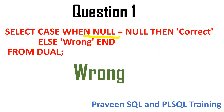The answer is wrong. Remember one thing: one null cannot be equal with another null because null is nothing — no value. How can you compare a null value? We cannot compare it. So the first condition is not correct, we go to the else part. When null equals null, the condition is false — it will be wrong. So the answer is wrong because one null cannot be equal with another null. This is a very important CASE statement concept.